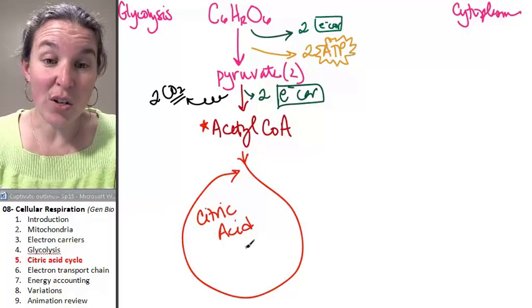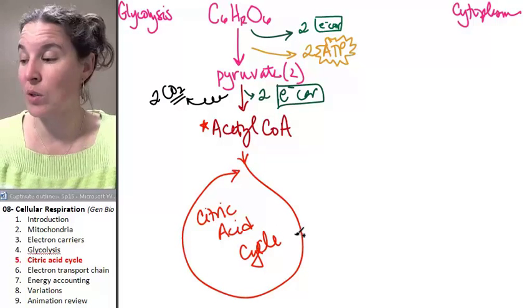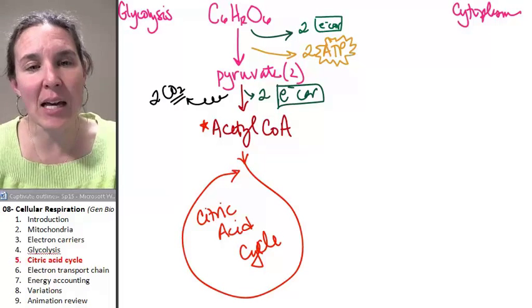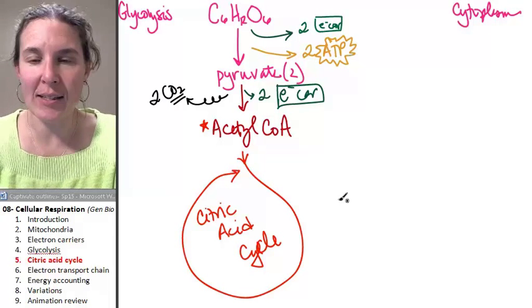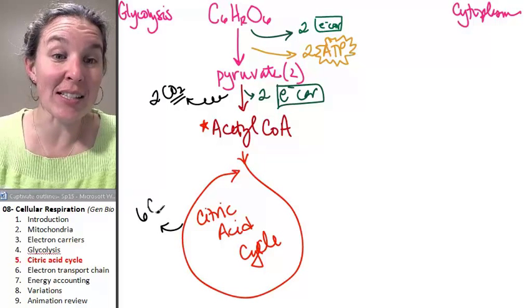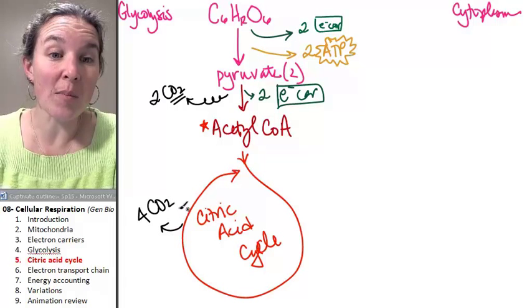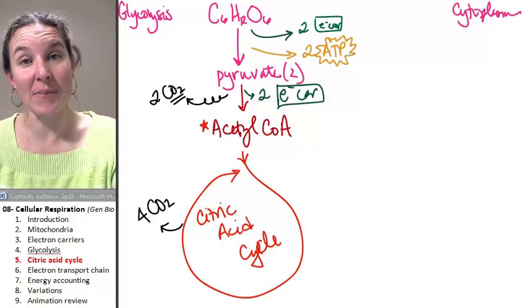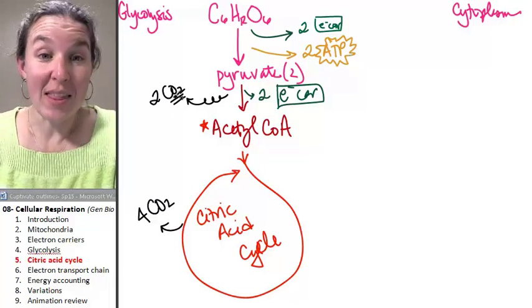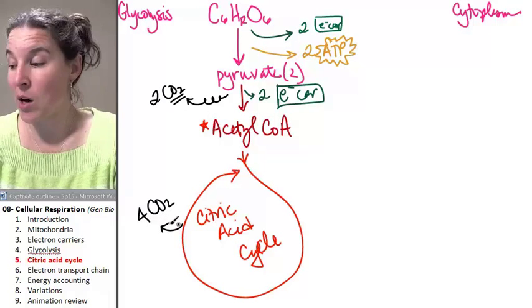It's also known as the Krebs cycle and either one is totally fine. And let's summarize what we get out of this thing. First of all, wow, this is awesome. We actually get four carbon dioxide out of this mix. And we're done. We've actually produced all the carbon dioxide molecules that we are going to produce.